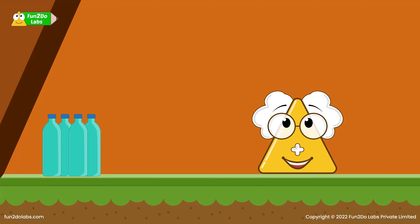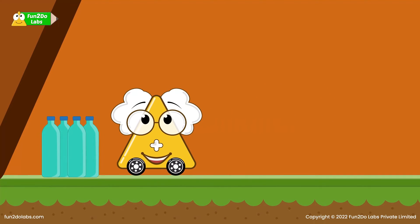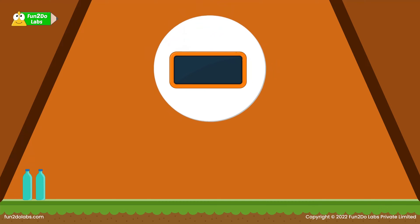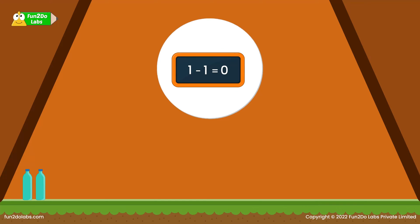Oh no, their water bottles are empty! How will they cook? What will they drink? Uncle Math quickly walks out to get some water from the nearby pond. How many people are left in the tent now? There was one person before Uncle Math left, that means there is no one in the tent now. The tent is empty!